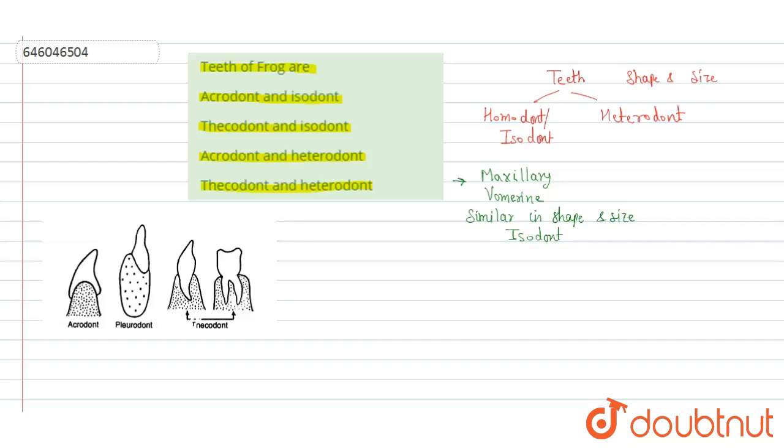Whereas the another category heterodont, in this example is human beings. We have incisors, canines, premolars, molars. So they all are having the different morphology, so they are of heterodont type.